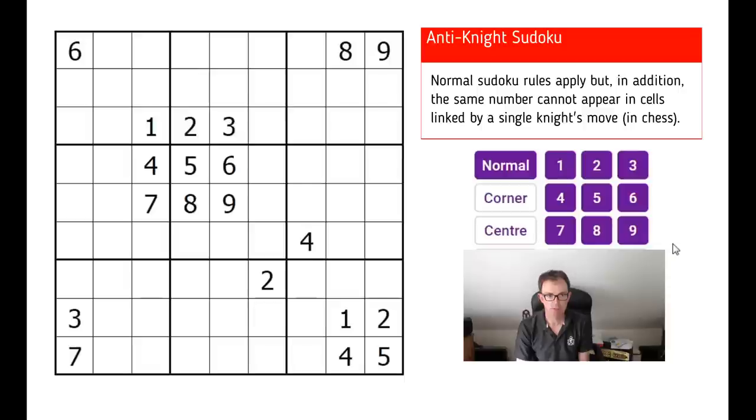Just a quick reminder for those of you that aren't used to the Anti-Knight restriction. This comes from chess. It means that we can't have, for example if we look at the one here, there could not be a one in this square. That's because a knight in chess, if there was a knight on this square, it could jump to this square. We imagine that the whole board is a chess board. So anything that's a knight's move away cannot be the same number.